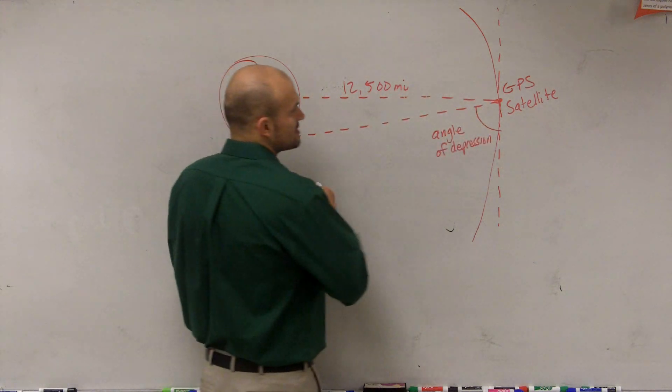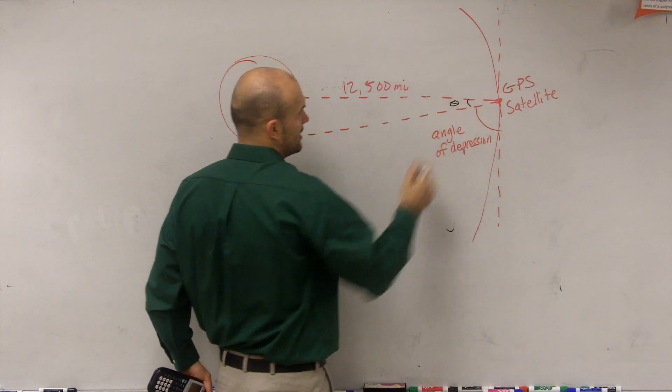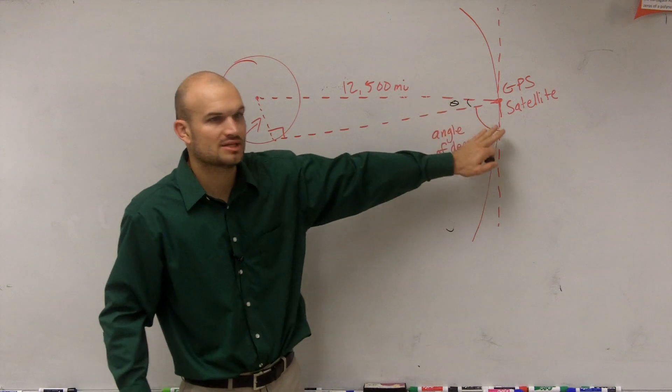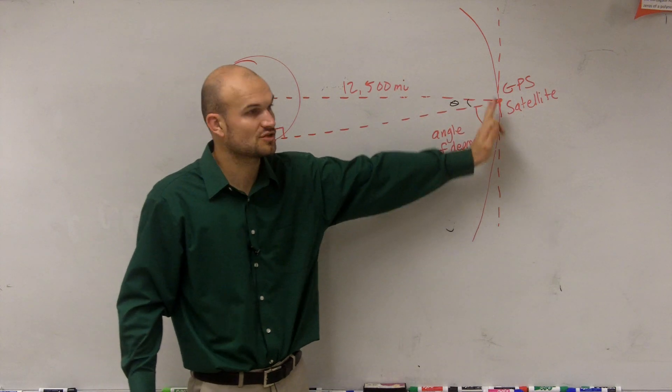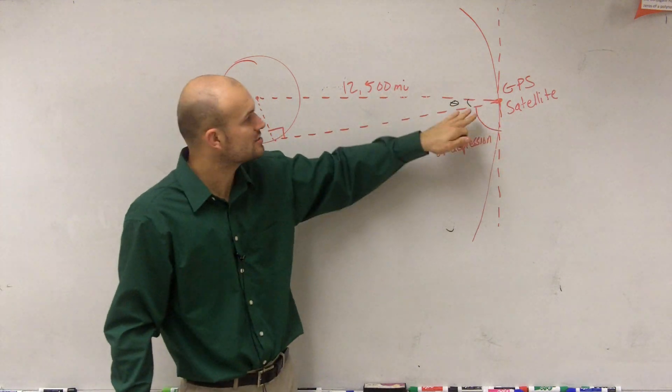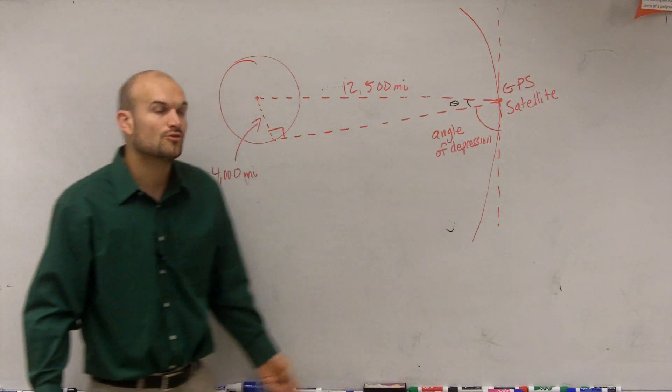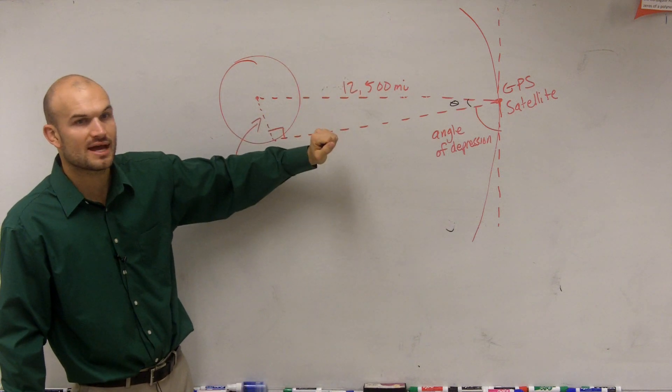So therefore, to find this angle of depression, it's helpful to notice that this angle theta, theta plus my angle of depression is going to equal 90 degrees. Because this is going to be a horizontal tangent line, so therefore that's going to add up to be 90 degrees. So I need to figure out theta. Well, to figure out theta, I need to understand what two side lengths I have.